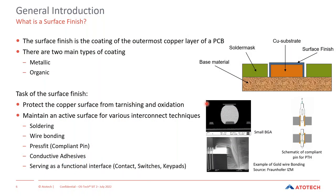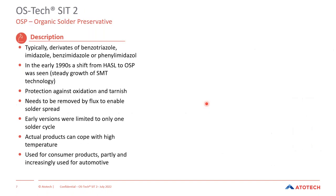So, a brief general overview: what is the task of the surface finish? The surface finish has two tasks. It shall prevent the copper from any impact from outside — from tarnishing and oxidation — and at the same time keep the copper surface active for subsequent assembly steps such as soldering or wire bonding. This can be done by either a metallic or an organic coating, and what we are going to talk about today is the organic coating.